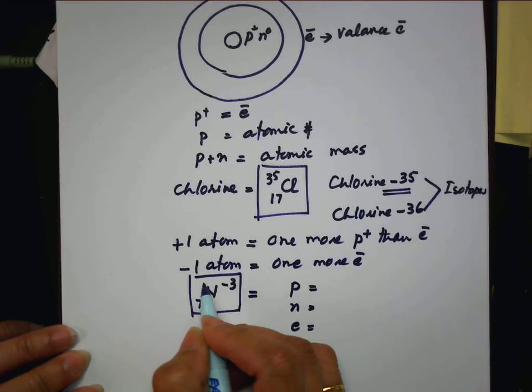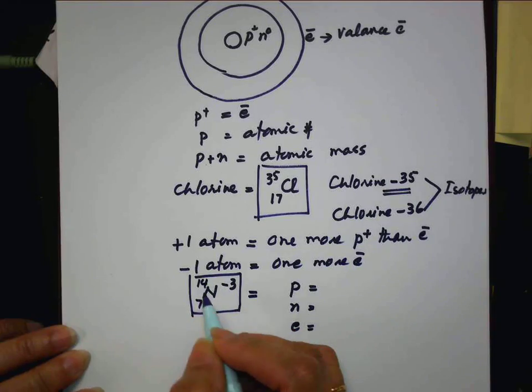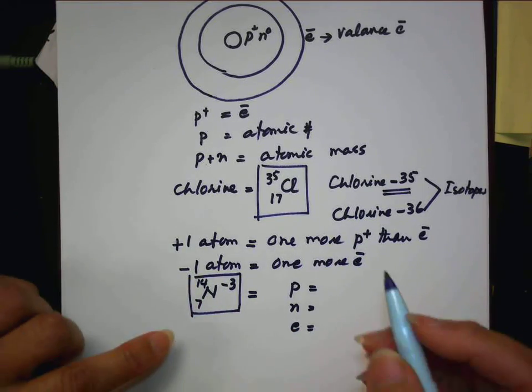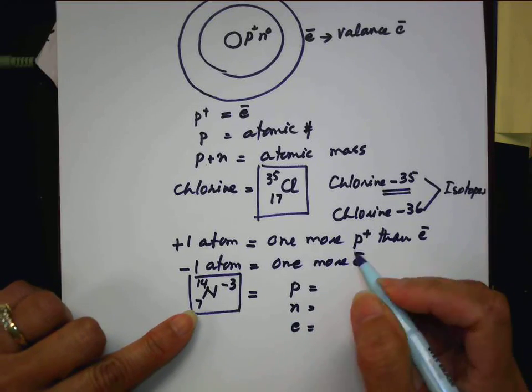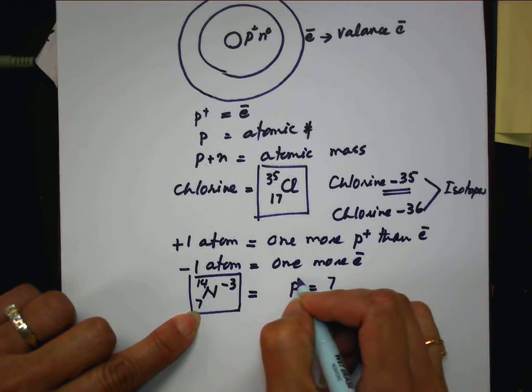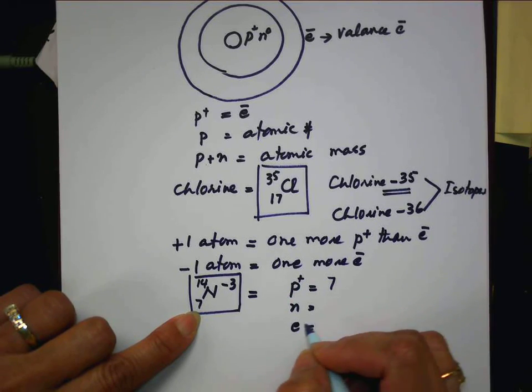But you have to now go ahead and find out the atomic mass. How much? Fourteen. These two, find out first. And then you can fill this in. So atomic number seven proton is seven.